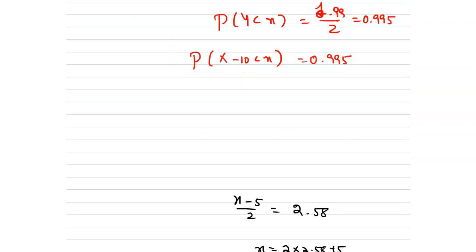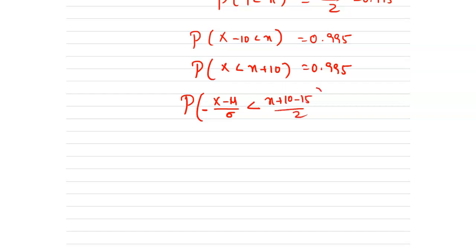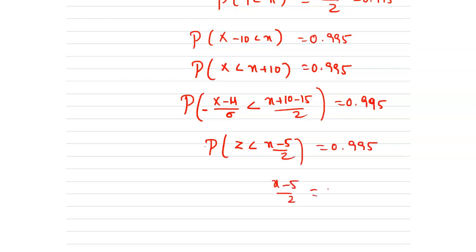Bringing 10 to the right side, we get p of x less than x plus 10 equals 0.995. Hence p of (X minus mu) divided by sigma less than (x plus 10 minus 15) divided by 2 equals 0.99. So (x minus 5) divided by 2 equals 2.58. Therefore x equals 5 plus 2 times 2.58, which equals 9.16.